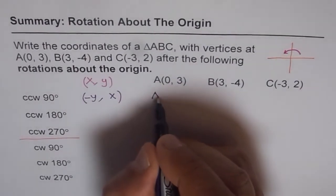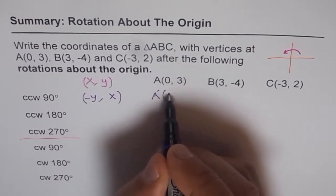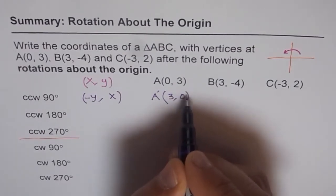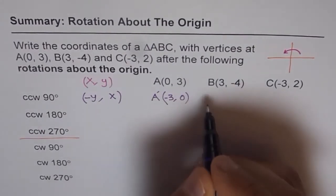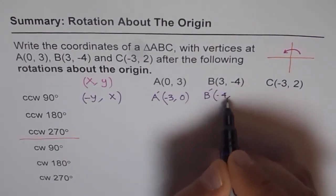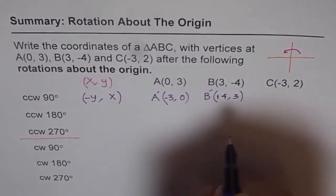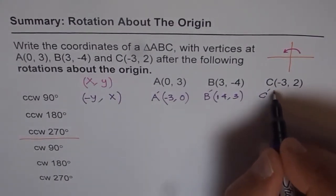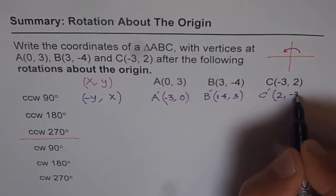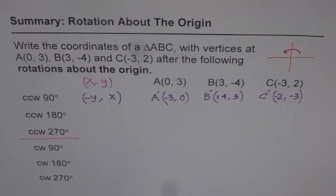Let's apply this to each vertex, calling the images A dash, B dash, C dash. For A(0,3): swap to get (3,0), change sign for X to get (-3, 0). For B(3,-4): swap to get (-4,3), change sign for X to get (4,3). For C(-3,2): swap to get (2,-3), change sign for X to get (-2,-3). These are the points after 90 degrees counter-clockwise rotation.